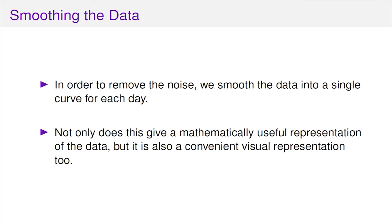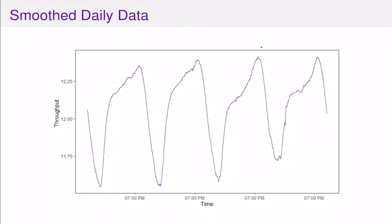In order to get that repeated shape a bit clearer - because it's a bit noisy with some interference - we're going to smooth the data so we've got a single curve for each day. Not only is this a mathematically useful representation of the data - that's the functional data aspect of this work - it's also a very convenient visual representation. We can clearly see the repeated shape over the course of each day: the trough in the middle of the night and the peak in the evening.